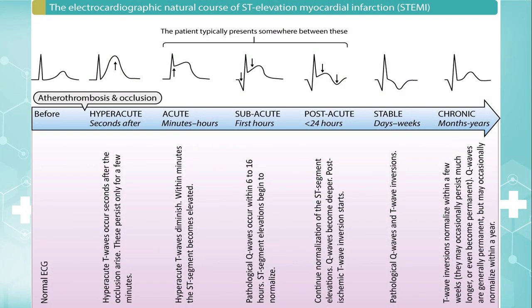The natural course of ST elevation myocardial infarction in untreated patients is as follows. The earliest electrocardiographic finding in ST elevation MI is hyperacute T waves. They are tall, peaked, and symmetric, and occur seconds after the obstruction arises. Hyperacute T waves are accompanied or immediately followed by ST segment elevation.